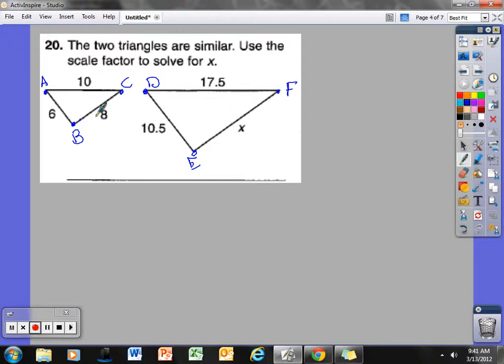Taking a look at side AB, if these 2 triangles are similar, use the scale factor to solve for X. I could see that side AB, which is 6, should be equal to side DE, which is 10 and a half. I have to use side BC because that corresponds with side EF. I know that side BC is equal to 8. I am trying to solve for side EF, which I don't know, and I'm going to put an X there.